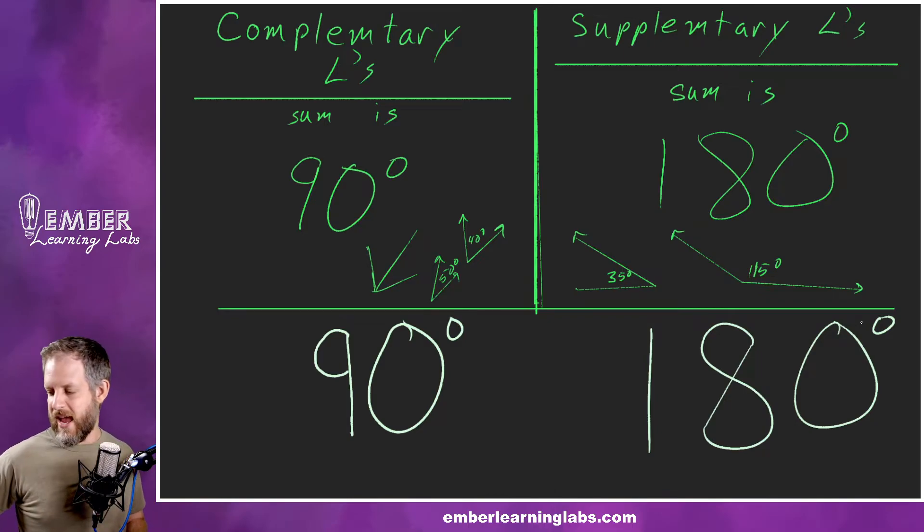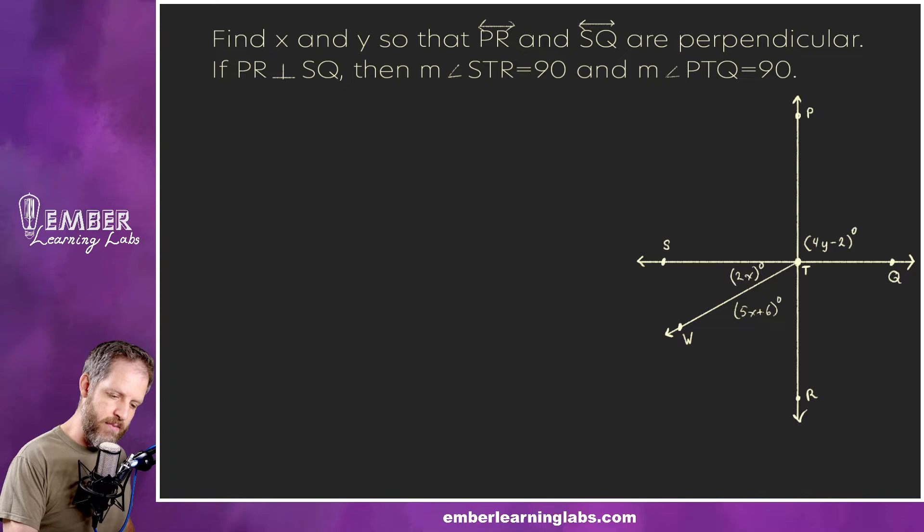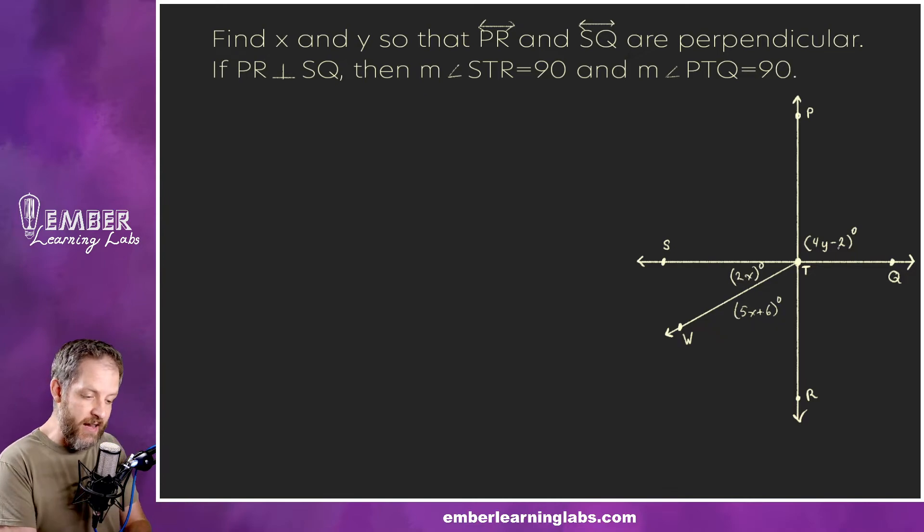We are going to look at a single example. Find x and y so that line PR, so that's this guy right here, and SQ, so that's this one right here, are perpendicular. It doesn't tell us there's no little marks that say that's a 90 degree, which would make these perpendicular. That's not on there, so it's not given, but we are supposed to pretend like it is true and then find x and y. If PR and SQ are perpendicular, that is what this symbol means.